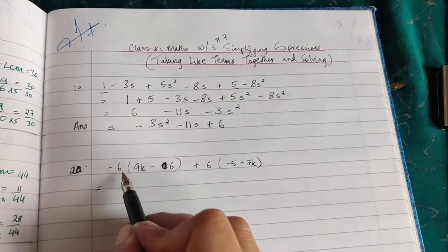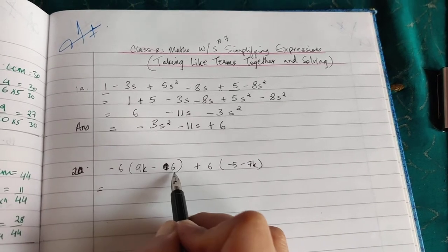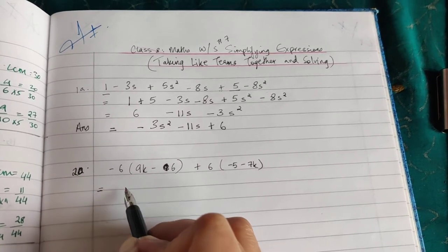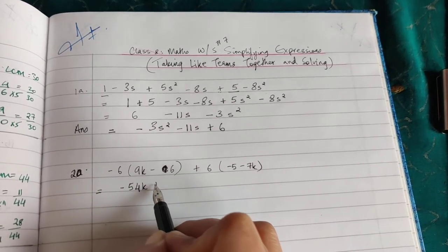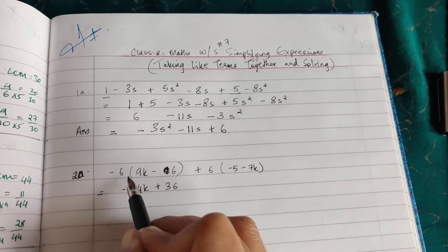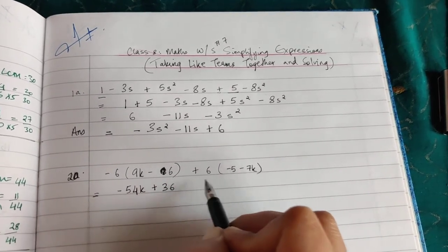Opening brackets means we multiply this with everything inside. So -6 into 9 is -54k, and -6 into -6 is plus... minus into minus is plus... 6 is 36. Plus, now we don't put a sign yet till we are sure.